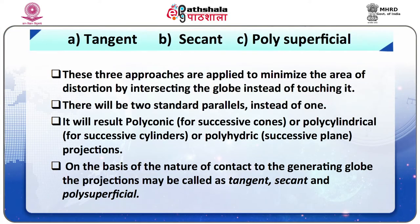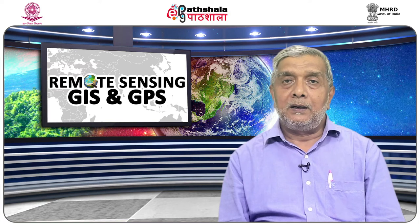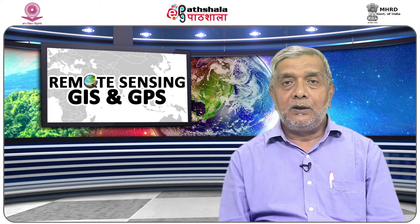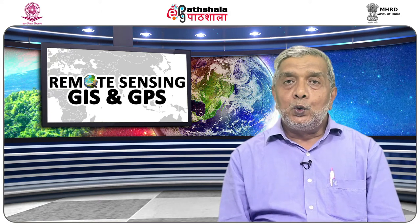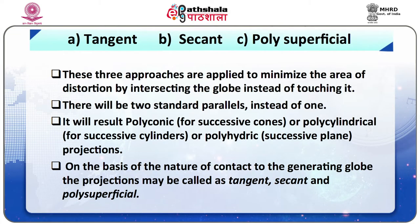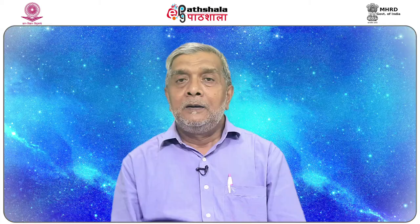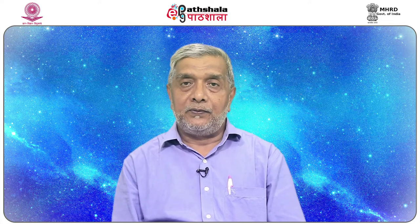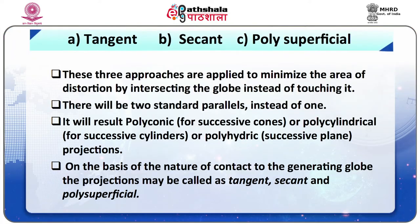These three approaches are applied to minimize the area of distortion by intersecting the globe instead of touching it. A flat plane will intersect the globe along a circular line, whereas a cone or cylinder intersects along two circular lines. By intersecting the generating globe, the extent of distortion-free area is increased from a point to a line in case of a flat plane, and from one line to two lines for cone and cylinder — meaning there will be two standard parallels instead of one. The distortion-free area may further be increased if more than one identical shape surface is made tangent to the globe, resulting in polyconic for successive cones, polycylindrical for successive cylinders, or polycydric for successive plane projections. On the basis of the nature of contact to the generating globe, projections may be called tangent, secant, or polysuperficial.